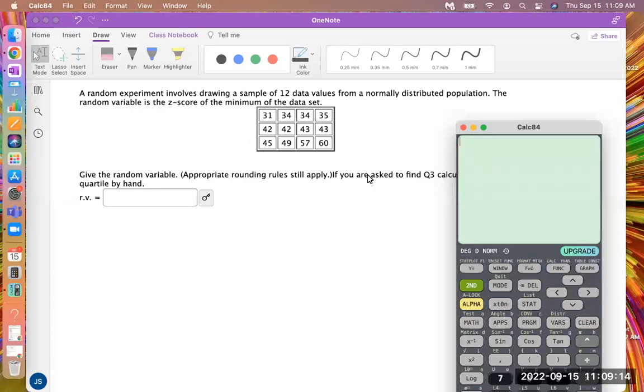Hi. A random experiment involves drawing a sample of 12 data values from a normally distributed population. The random variable is the z-score of the minimum of the data set.